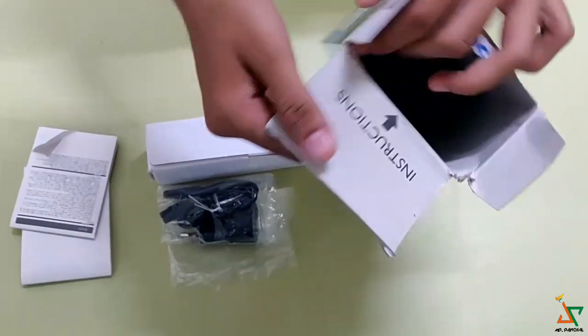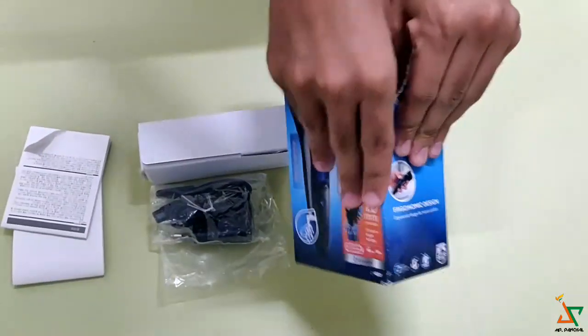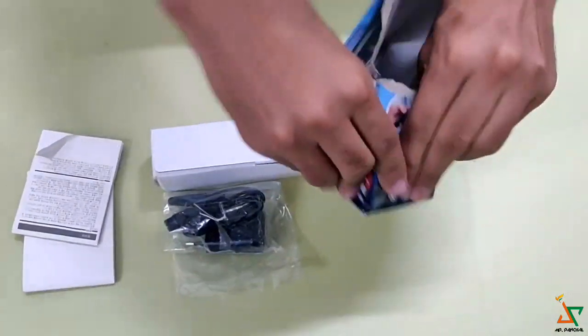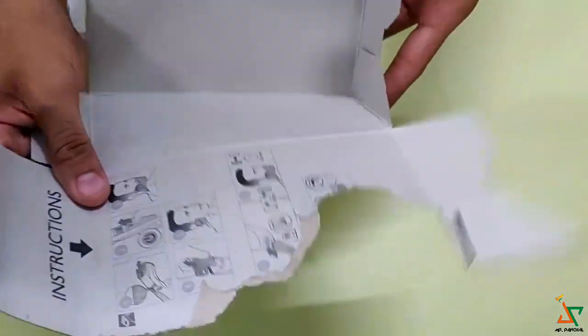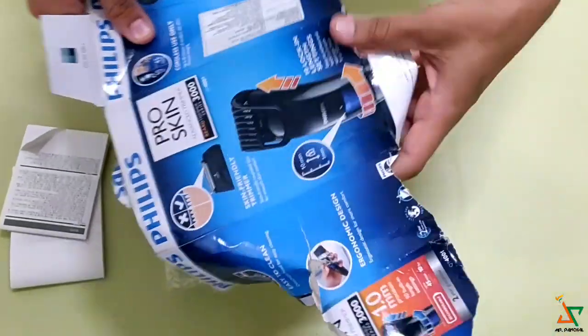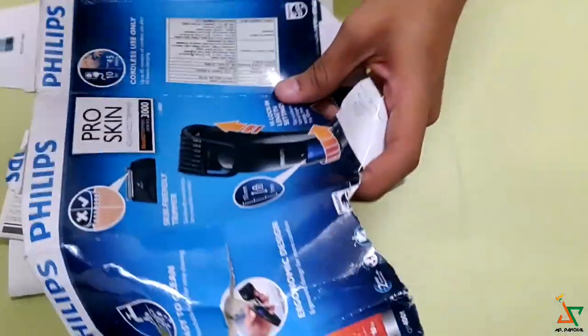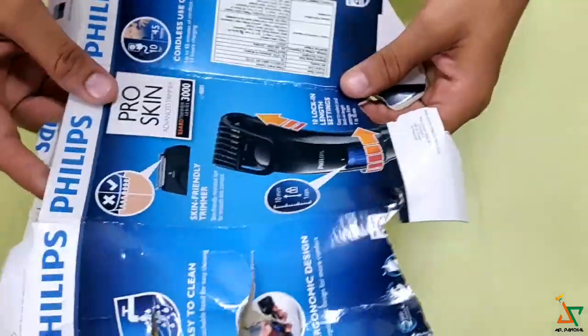So friends, instructions are given inside this box. There are lots of instructions. How we use this trimmer. And there are lots of photos and description and price and where it's manufactured and complete details of this product.